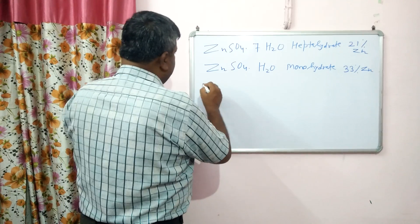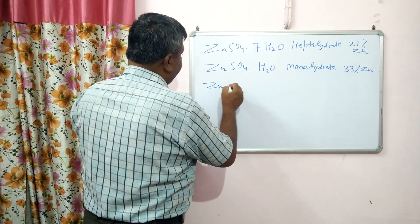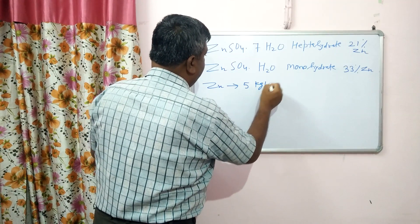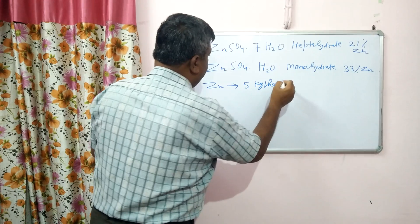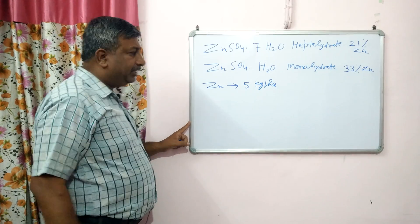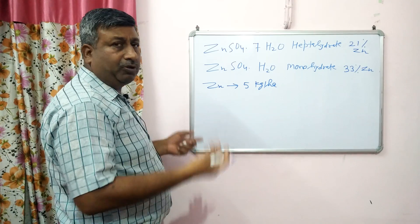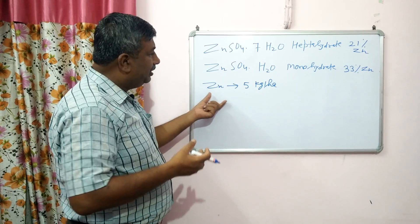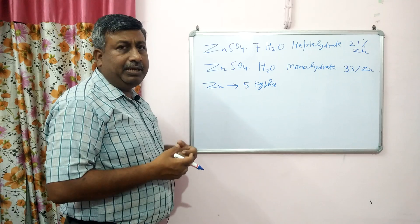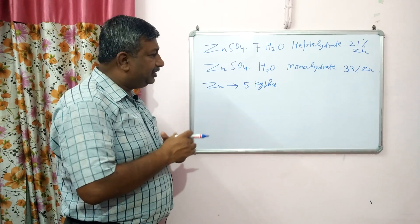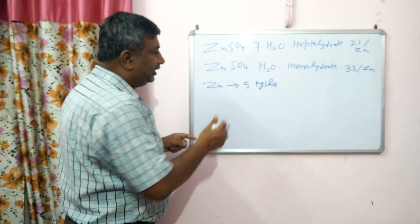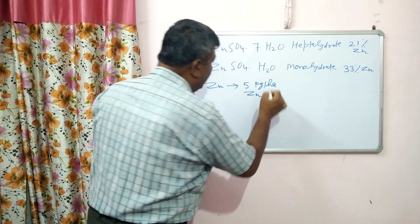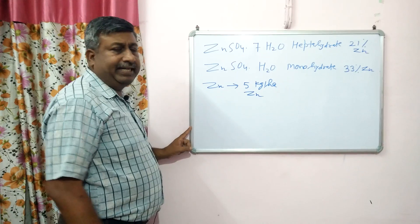Actually, zinc is applied at the rate of 5 kg per hectare, depending upon the crops. In general, for cereal crops like rice or wheat or any other crop, 5 kg per hectare zinc is sufficient. So it is 5 kg zinc — not zinc sulphate.